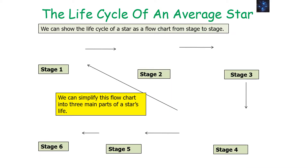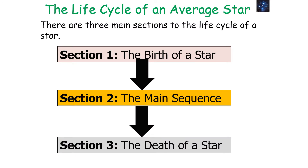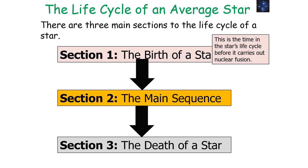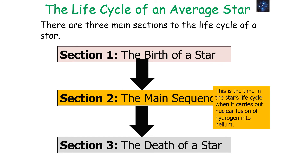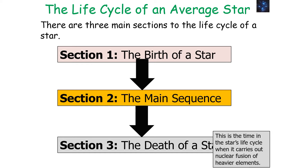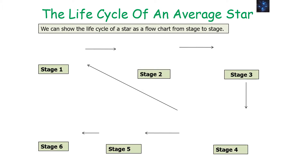We can show this life cycle as a simplified flow chart in three main parts: the birth of a star, the main sequence of a star, and the death of a star. The birth of a star is the time before it carries out nuclear fusion. The main sequence is the time when it carries out nuclear fusion of hydrogen into helium. The death of a star is the time when it carries out nuclear fusion of heavier elements and beyond.